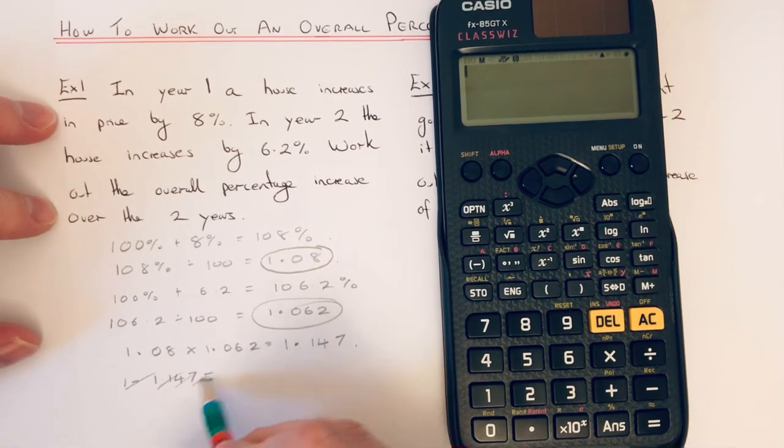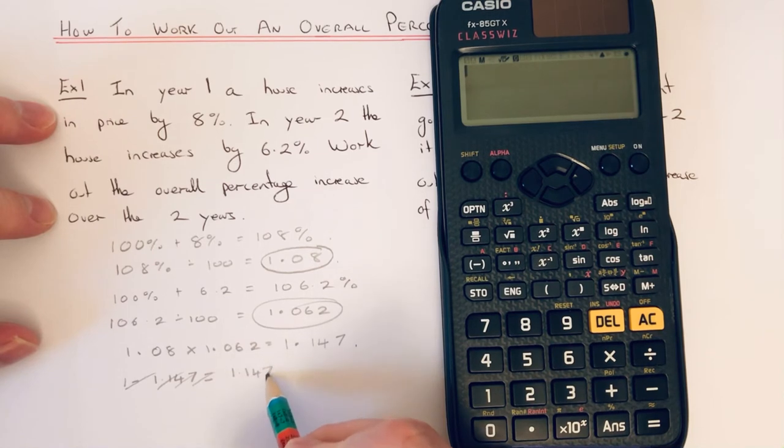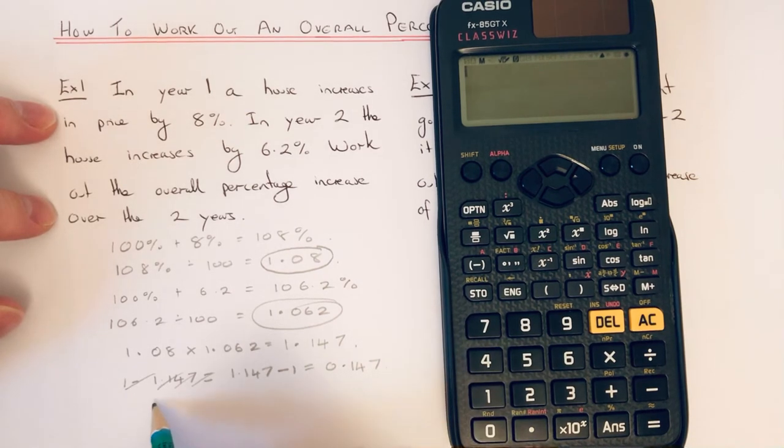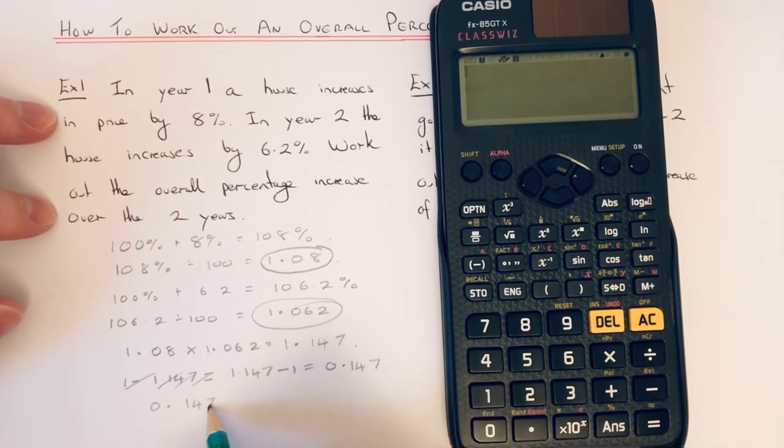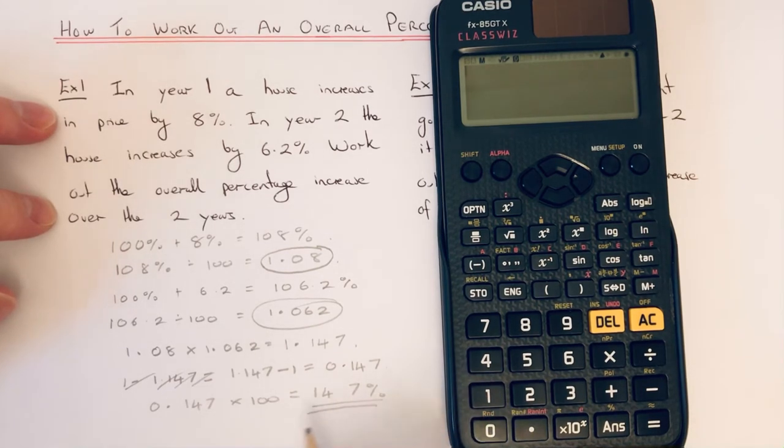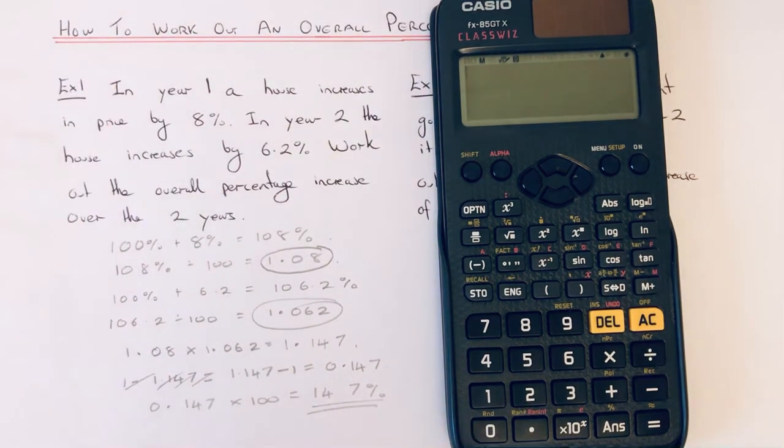Sorry, I've put those the wrong way. That gives you 0.147, and then we just need to times that by 100, which is 14.7%. So that is our overall percentage increase over the two years.